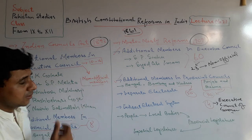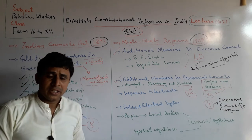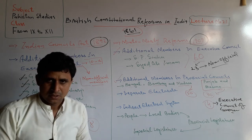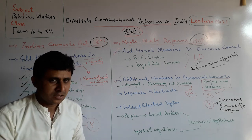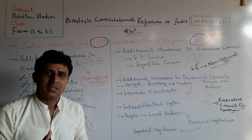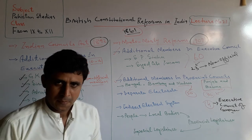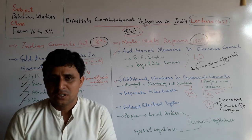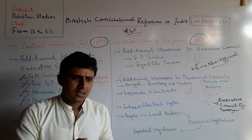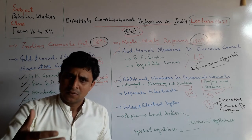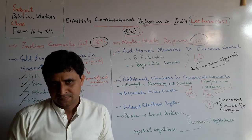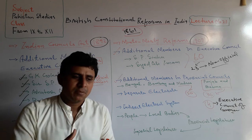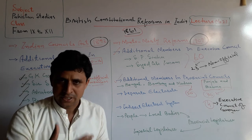In the Minto-Morley Reforms 1909, Indian members were given some extra powers. They could ask supplementary and extra questions. They could also present resolutions for the problems of Indian people. They could also discuss the yearly financial budget.